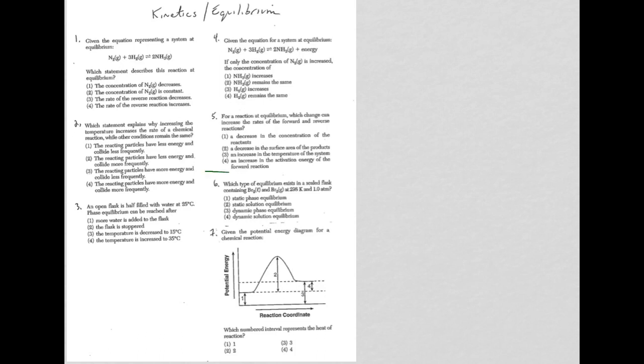So question 1, given the equation representing a system in equilibrium. So I have the word equilibrium, and you also see I have double arrows, which indicates I have a system that is a reversible process.